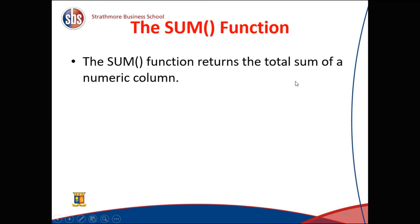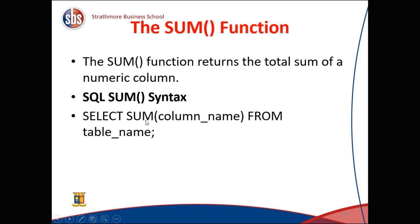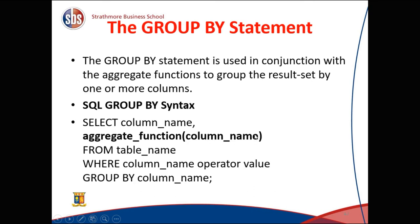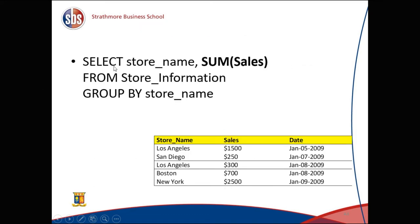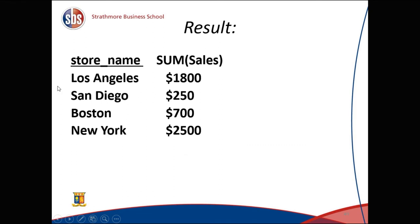The SUM function adds the total of a numeric column. Syntax: SELECT SUM(column_name) FROM table_name. The GROUP BY statement is used with aggregate functions to group results by one or more columns. For example, SELECT store_name, SUM(sales) FROM store_information GROUP BY store_name groups the two Los Angeles rows together, giving: Los Angeles 1800, San Diego 250, Boston 700, New York 2500.